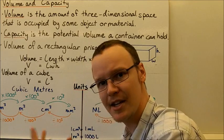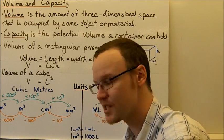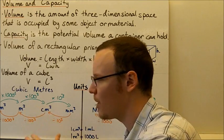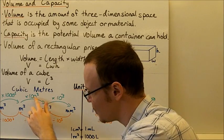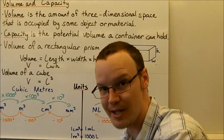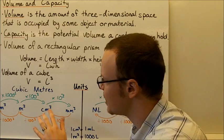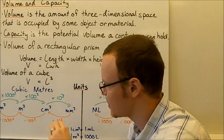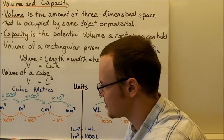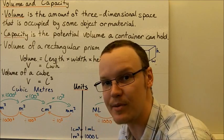To go from metres to centimetres, normally we multiply by one hundred. But with cubic units we have three dimensions, so we need to multiply by a hundred times a hundred times a hundred, or one hundred cubed. Going from centimetres to millimetres, we'd normally multiply by ten, but again with three dimensions we multiply by ten cubed. Going the opposite direction, we divide by those same numbers.